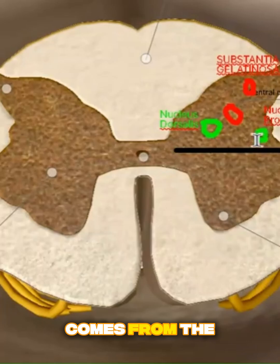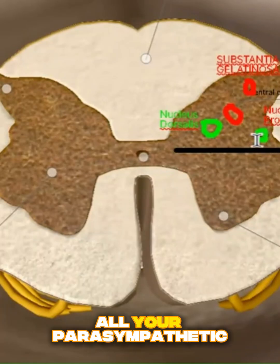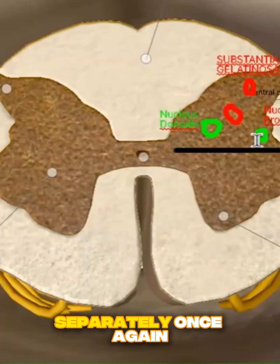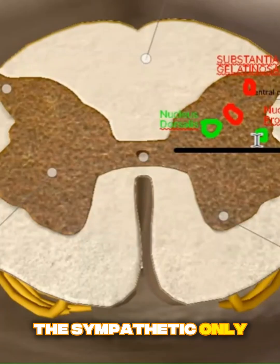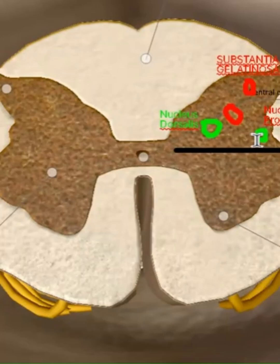Parasympathetic, however, comes from the sacral region and cervical region where you have all your parasympathetic nerves. We'll do that separately once again. The sympathetic only comes from the thoracolumbar region. They ask this in the viva and in the MCQs. So you have two in the backside, two in the middle.